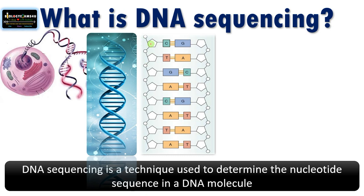This is a nucleotide — it has a sugar, a phosphate, and a nitrogenous base. The sugar-phosphate backbone remains the same in a DNA molecule. The only thing that is changing is the order of the base sequence, such as C, G, A, and so on. So different proteins have different orders of base sequence.